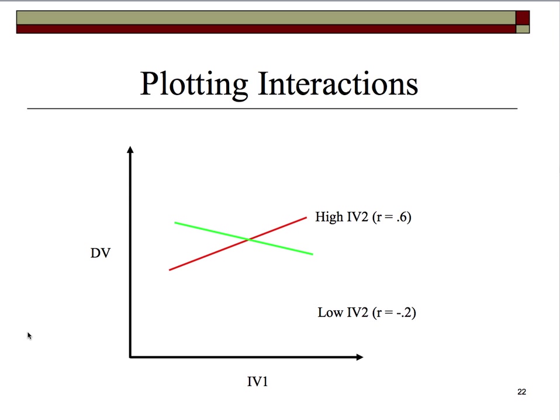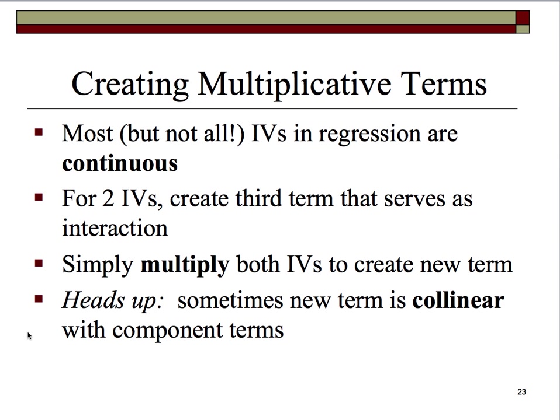Let's create those multiplicative terms. We have to remember that most but not necessarily all IVs in regression are continuous. We can have independent variables for gender, hierarchical position in a company, manager versus non-manager, or even a set of dummy variables for one variable with multiple categories like race, ethnicity, or level of education. But typically, we like to use continuous variables in regression — it gives us much more to work with and a richer arena for interpreting the results.